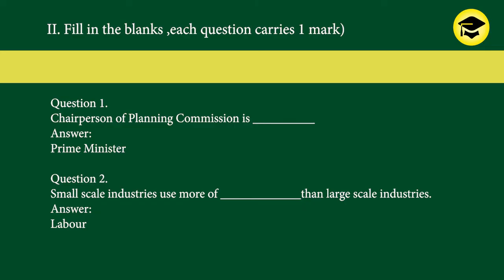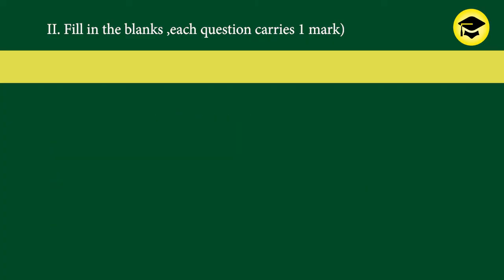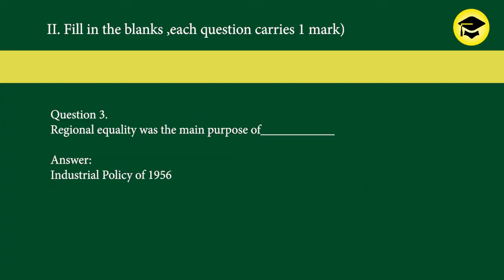Fill in the blanks — each question carries one mark. Question 1: Chairperson of Planning Commission is blank. Answer: Prime Minister. Question 2: Small-scale industries use more of blank than large-scale industries. Answer: Labor. Question 3: Regional equality was the main purpose of blank. Answer: Industrial Policy of 1956.